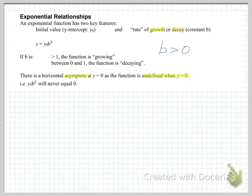Some of the key terms, growth and decay, relate to the constant b. There is a horizontal asymptote at y equals zero, as the function is undefined when y equals zero. In other words, the curve never reaches the value y equals zero. It never touches the x-axis. Remember that y equals zero is the equation of the x-axis.